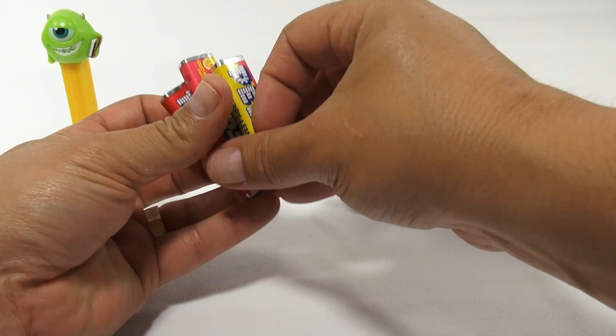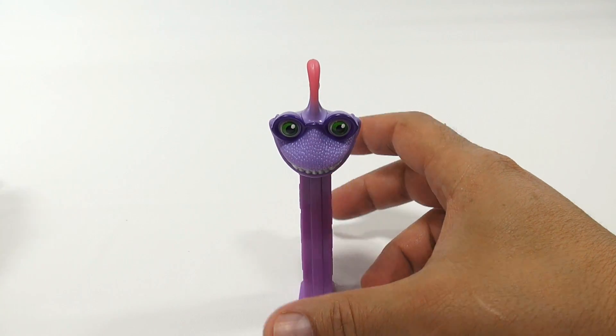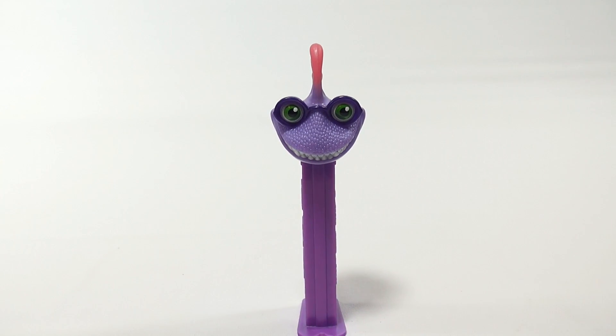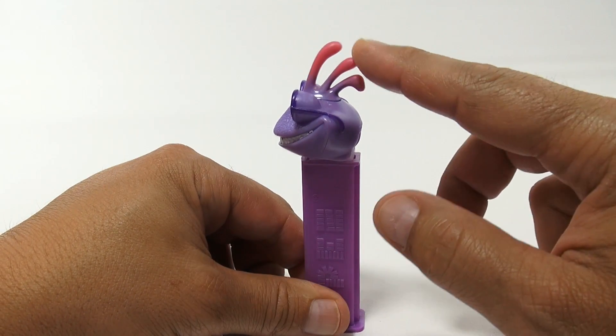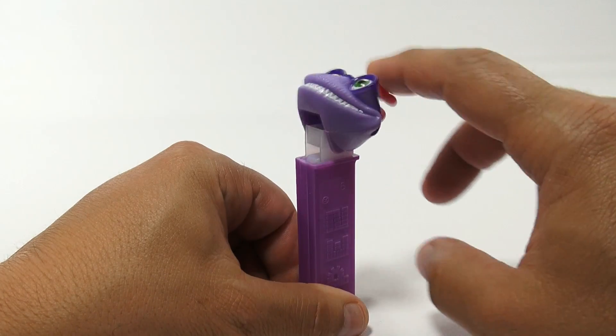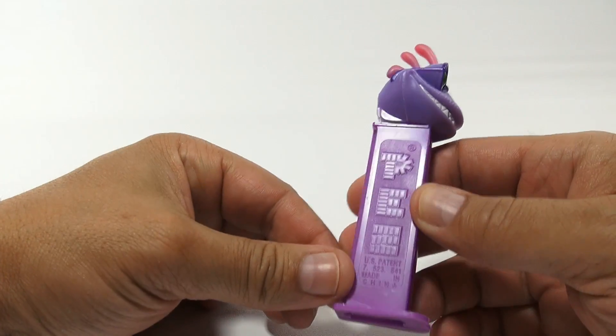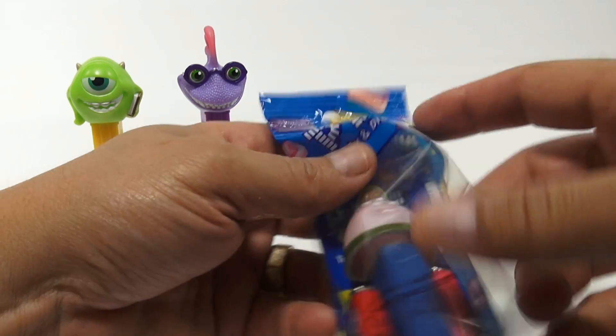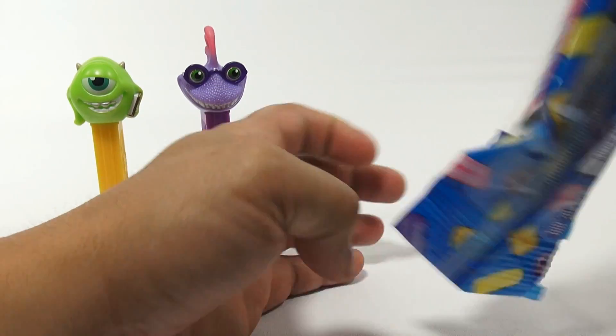This one also had raspberry lemon, put those in the back. Let's take a look at him, we'll get the camera in there real tight. So it looks like he's got scales on his top head section. Pretty neat, purple PEZ.